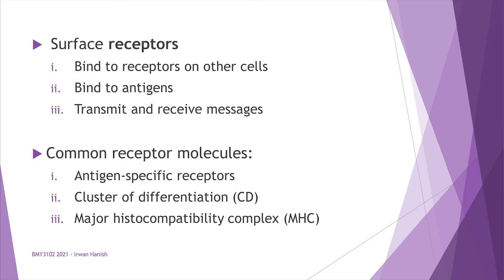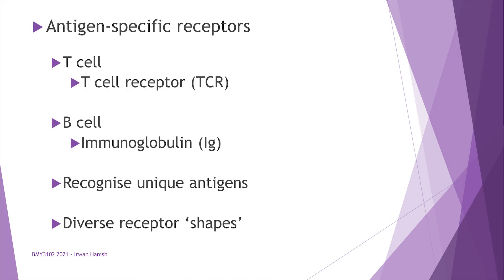There are three types of common receptors. First is the antigen-specific receptors. Second is the cluster of differentiation, abbreviated as CD. Third is the major histocompatibility complex, MHC. Antigens are any substances that our immune receptors can bind to — the faces of the enemy that T and B cells recognize through antigen-specific receptors, called T cell receptors (TCR) on T cells, and B cell receptors or immunoglobulins (IG) on B cells.